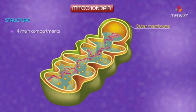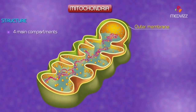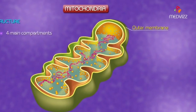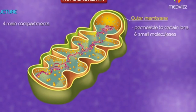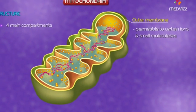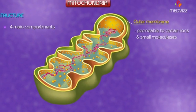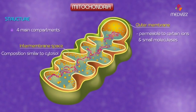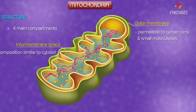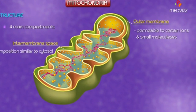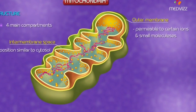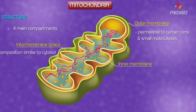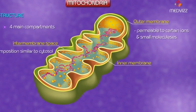Mitochondria have four main compartments. First, the outer membrane, which is permeable to certain ions and small molecules. Second, the intermembrane space, which has a composition similar to the cytosol.